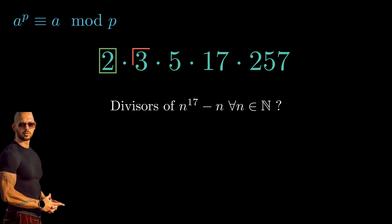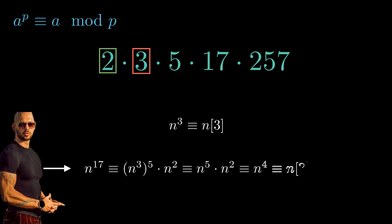What about 3? Time to use Fermat's little theorem again. n to the 3 is congruent to n modulo 3. Simplifying n to the 17 modulo 3 yields n to the 3 all raised to the 5 times n squared. With some mental Aikido, we show that n to the 17 is congruent to n modulo 3, meaning 3 divides it.